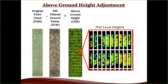The pipeline works as follows: start with the original point cloud (digital surface model), identify ground points to create a digital terrain model, then subtract to get the crop surface model — the above-ground height estimates for our maize plots.